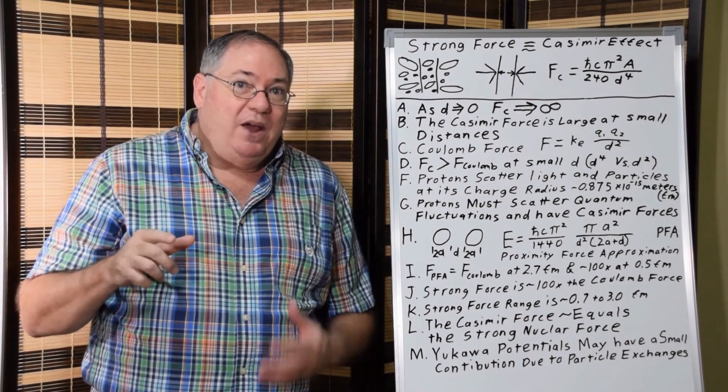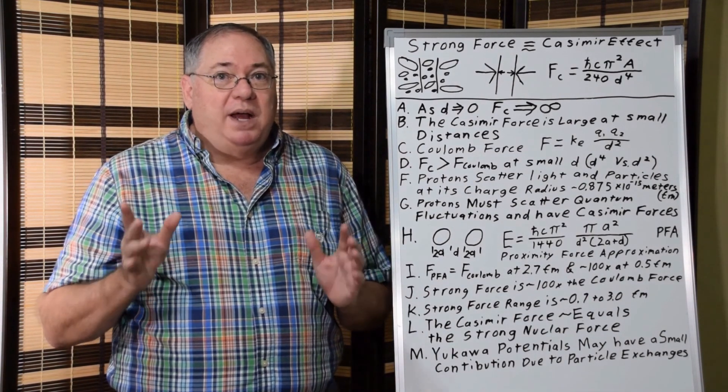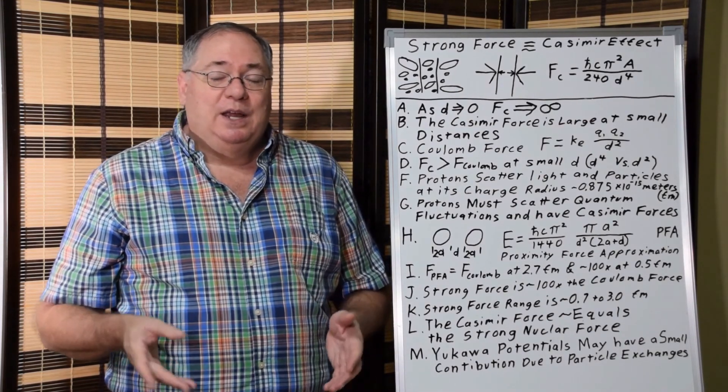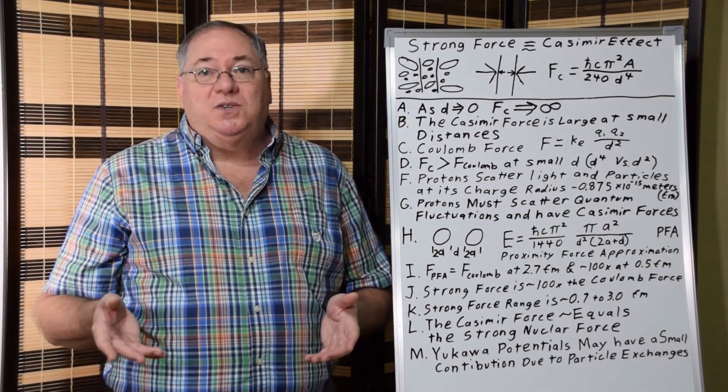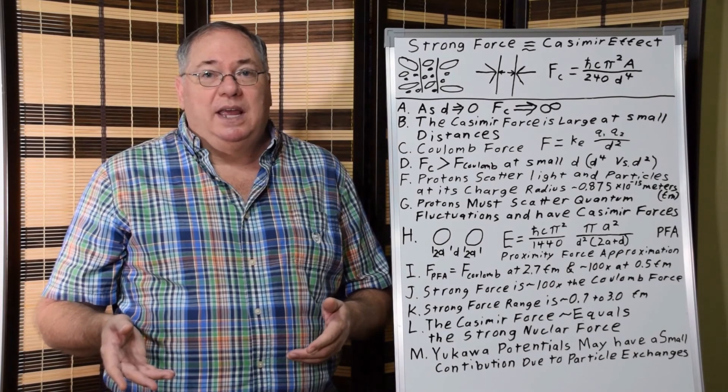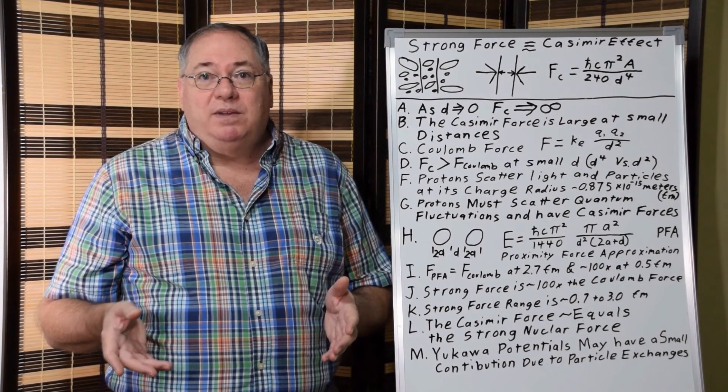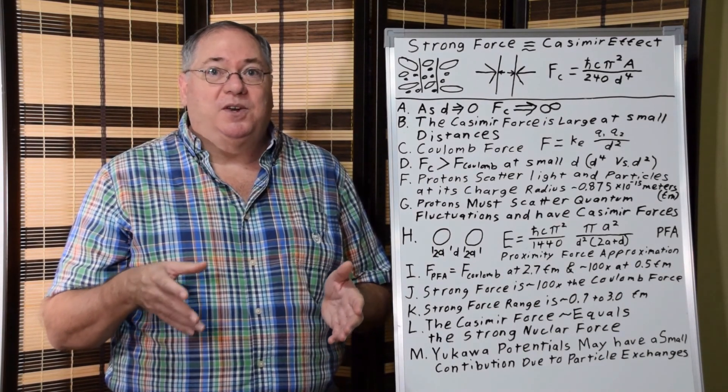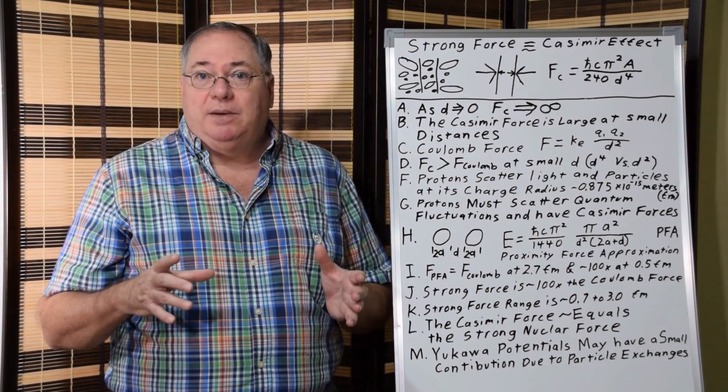So we know that the Casimir effect must be accounted for within a nucleus because protons scatter. Protons are known to scatter light and particles, and so they must also scatter quantum fluctuations. And so if two particles scatter quantum fluctuations, they're going to participate in Van der Waals forces because they're going to exclude quantum wavelengths in between the two particles.